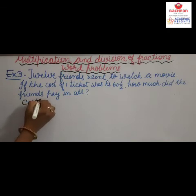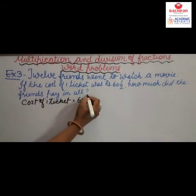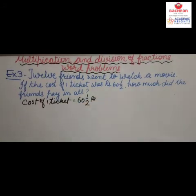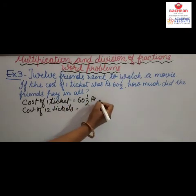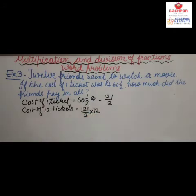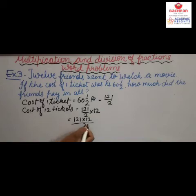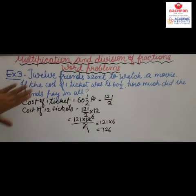Cost of one ticket is 16 and 1/2 rupees. Converting to improper fraction: 33/2. Cost of 12 tickets: 33/2 multiplied by 12. We write 33 × 12 divided by 2. Since 2 and 12 are divisible, we simplify: 12/2 = 6. So 33 × 6 = 198... now we multiply 121 by 6 which is 726. The friends paid Rs. 726 in all. 12 friends paid Rs. 726.